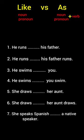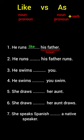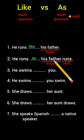He runs ___ his father. His father is a noun, so we use like: he runs like his father. He runs ___ his father runs. His father is a noun and runs is a verb, so we use as: he runs as his father runs.